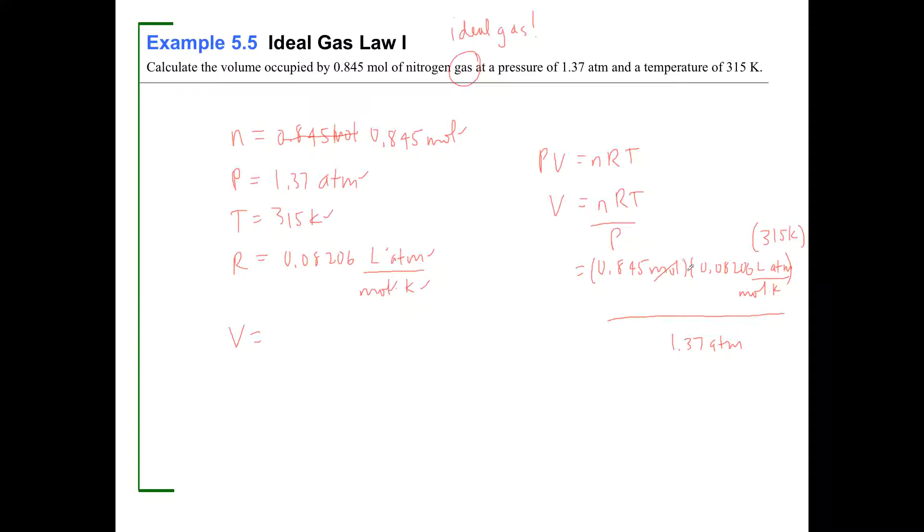So if PV is equal to NRT, then V is equal to NRT over P, which is equal to 0.845 moles times 0.08206 liter atmospheres per mole kelvin. Temperature is on top here. I didn't leave myself enough room for it. 315 kelvins divided by pressure, which is 1.37 atmospheres. So let's make sure everything crosses off here. Moles cross off with moles. Kelvins cross off with kelvins. Atmospheres crosses off with that. And I'm left with liters, which is exactly what I wanted.